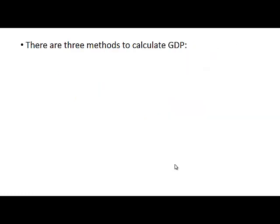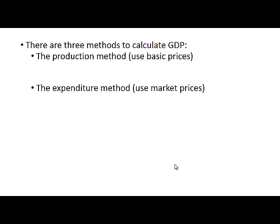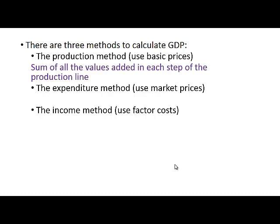There are three methods we can use to calculate GDP: the production method, the expenditure method, and the income method. The production method adds all the values added in each step of the production line together to calculate GDP.